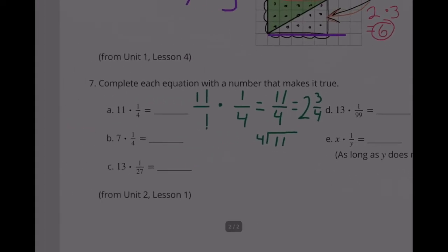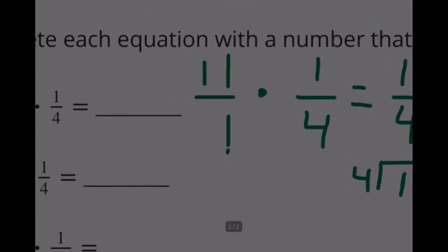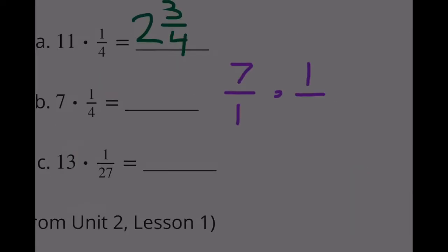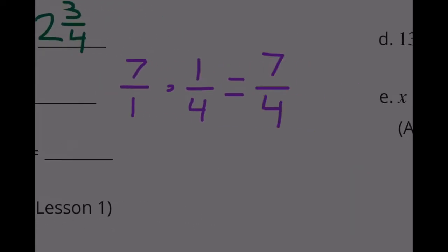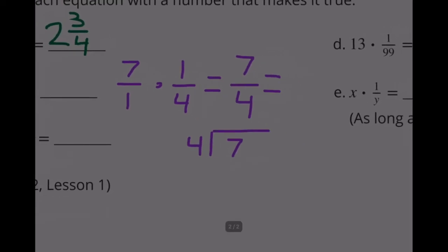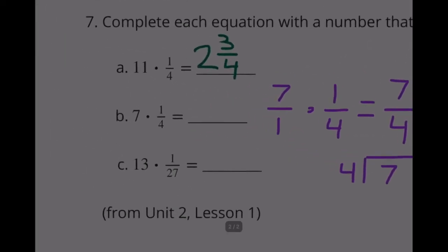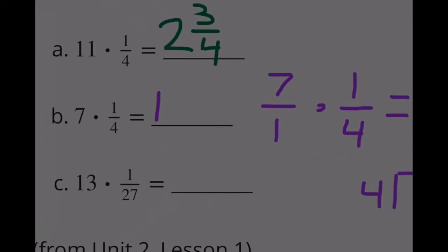Part B: 7 times one-fourth equals seven-fourths, which is 7 divided by 4. Four goes into 7 once with 3 left over, so the answer is 1 and three-fourths.